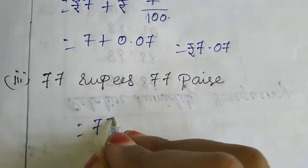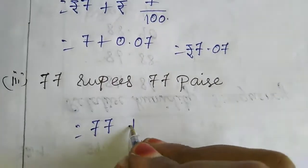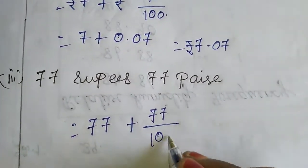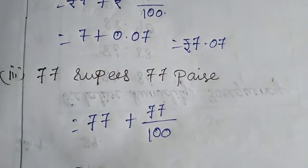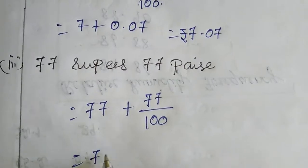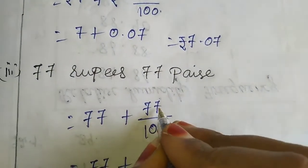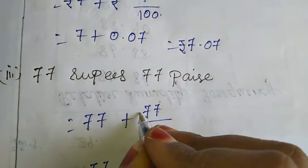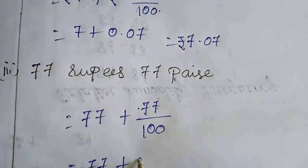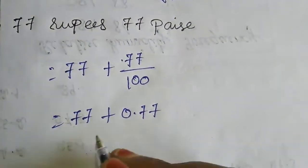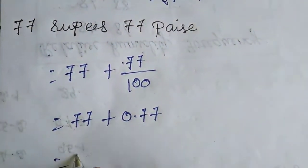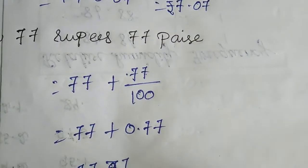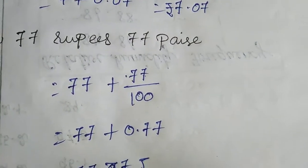Here also we will write 77 plus 77/100. Here we have two digits already, so the decimal point moves back two places — that gives 0.77. If you add this, you will get 77.77 rupees.